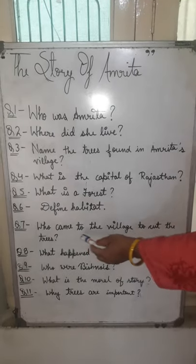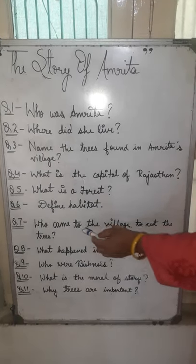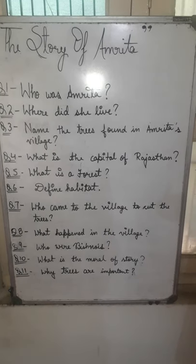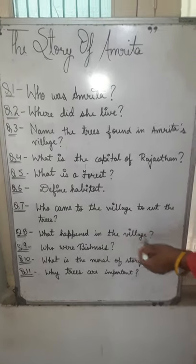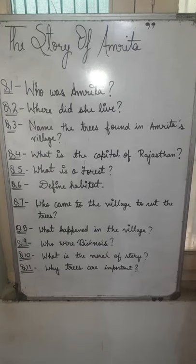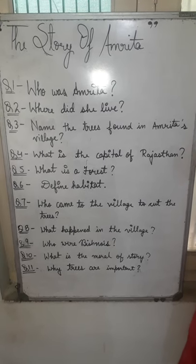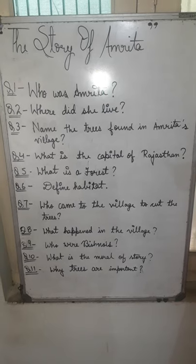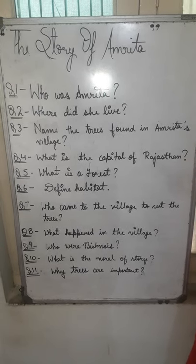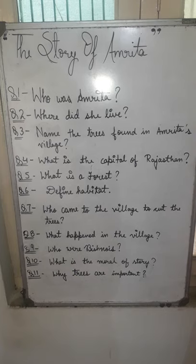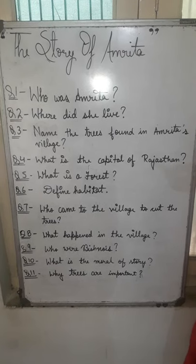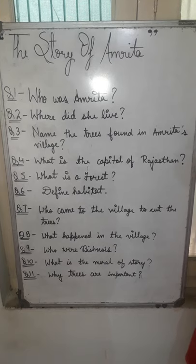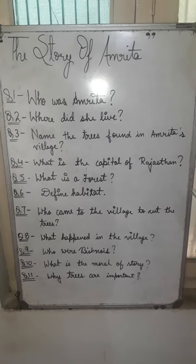Who came to the village to cut the trees? The king's men came to the village to cut the trees. When Amrita saw that some people came to cut the trees, she hugged the trees tightly and said, 'First cut me, then cut the trees.' But the king's men did not listen to them, and they killed Amrita, her daughters, and some villagers also.